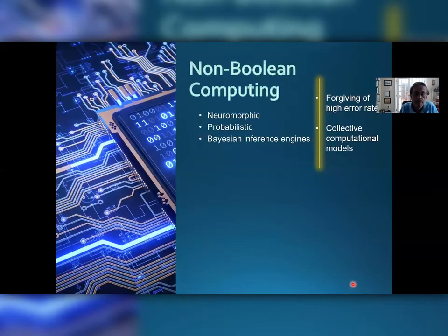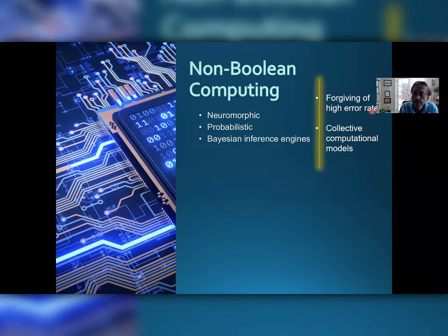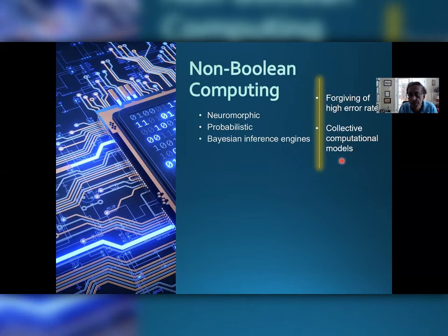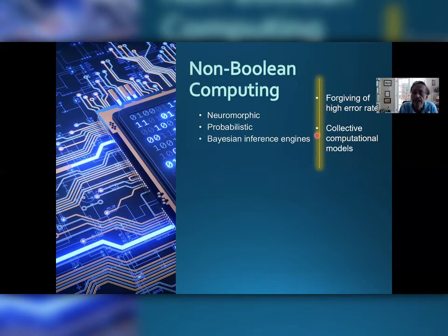So what is StrainTronics good for? Obviously it is good for non-Boolean computing, such as neuromorphic, probabilistic, and Bayesian inference engines. These computing paradigms are forgiving of high error rates because most of them are based on collective computational models, where it is the collective activity of many devices working cooperatively in unison that elicits the computational result. The failure of one or even a few devices does not impair circuit functionality. We simulated a neuromorphic network with nanowires and found that functionality is not destroyed even if 30% of the devices fail.